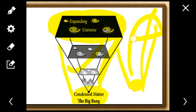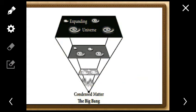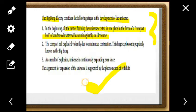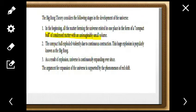The Big Bang Theory says the universe started from a pinpoint and expanded like anything. The key points considered are: all matter in the universe existed in one place in the form of a compact ball of matter with an unimaginably small volume. This compact ball exploded violently due to continuous contraction, and the huge expulsion is popularly known as the Big Bang.